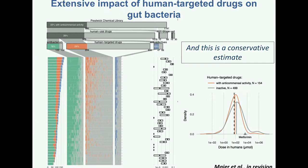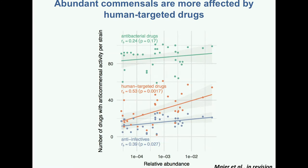If you look into estimates of the expected concentration of different drugs inside our gut — for example, metformin — this is way above what we have tested. For a number of drugs, we have now increased concentration and see what happens. Of course, as you increase concentration, you start seeing effects of many other drugs on gut bacteria. Another interesting observation is that abundant commensals are more affected by human-targeted drugs, meaning the effects on the human microbial community and the side effects thereafter are going to be quite large.